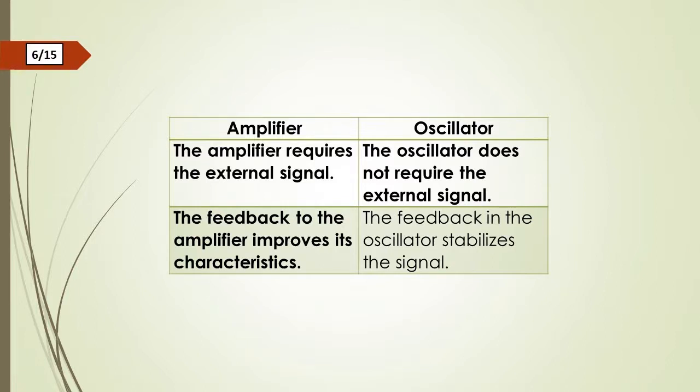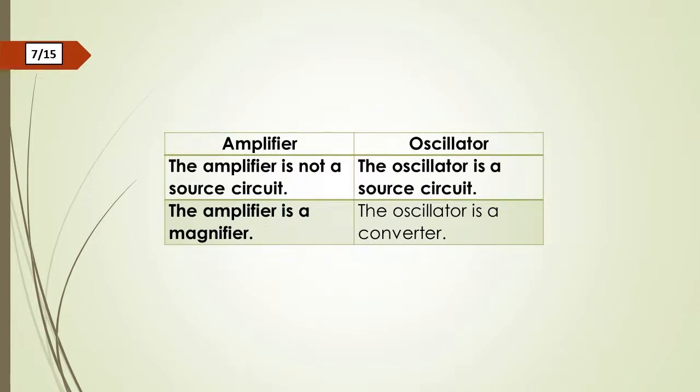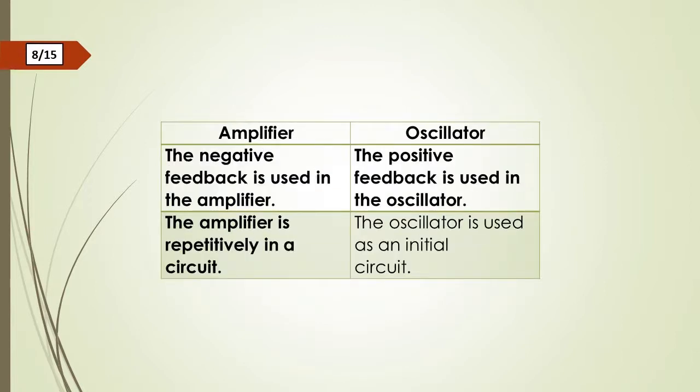The feedback to the amplifier improves its characteristics. The feedback in the oscillator stabilizes the signal. The amplifier is not a source circuit. The oscillator is a source circuit. The amplifier is a magnifier. The oscillator is a converter. The negative feedback is used in the amplifier. The positive feedback is used in the oscillator.